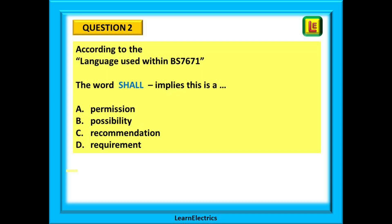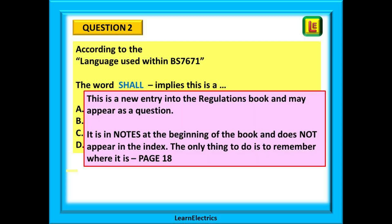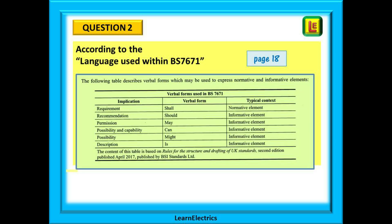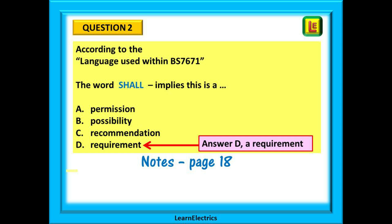Now for practice question 2. According to the language used within BS 7671, the word 'shall' implies this is a what? This is a completely new entry into the regulations book and may appear as a question. The answer is in the notes at the beginning of the book on page 18 and does not appear in the index. Here we find a very useful table at the bottom of the page. The word 'shall' means that this is a requirement — no ifs, no buts, it must be done. So answer D is correct.